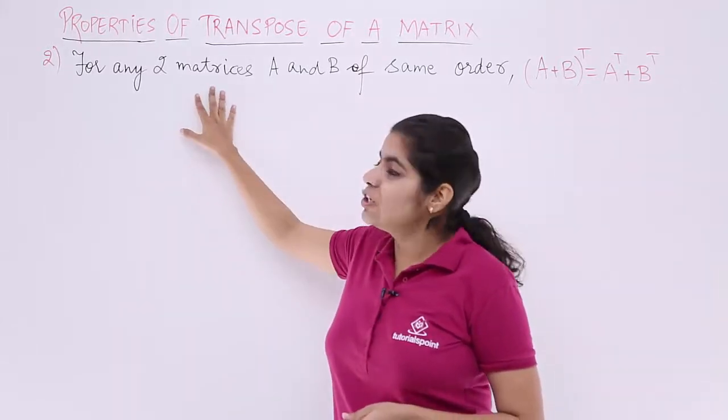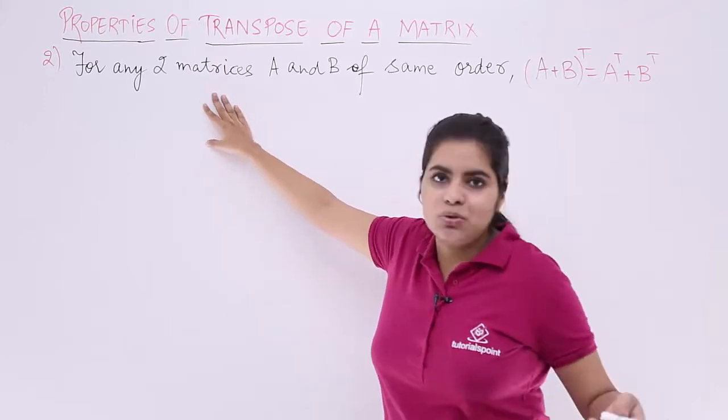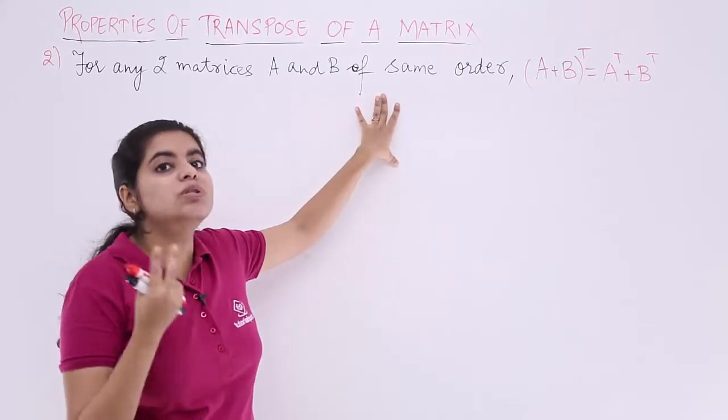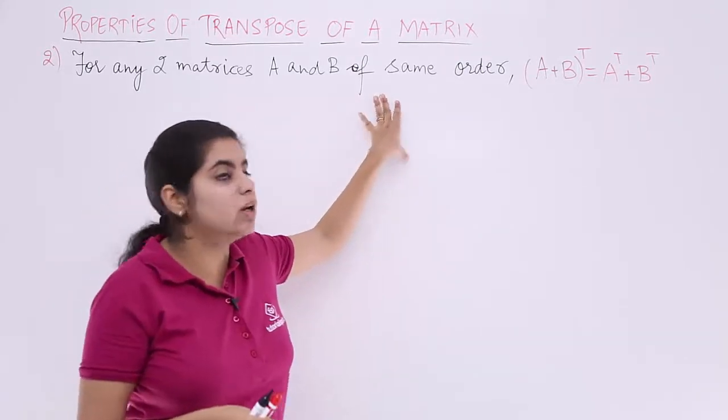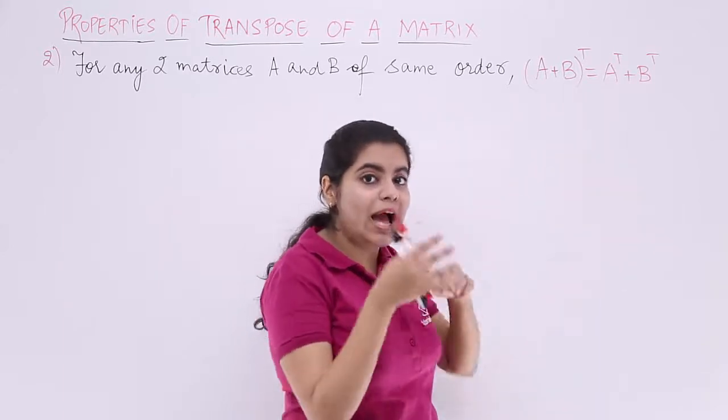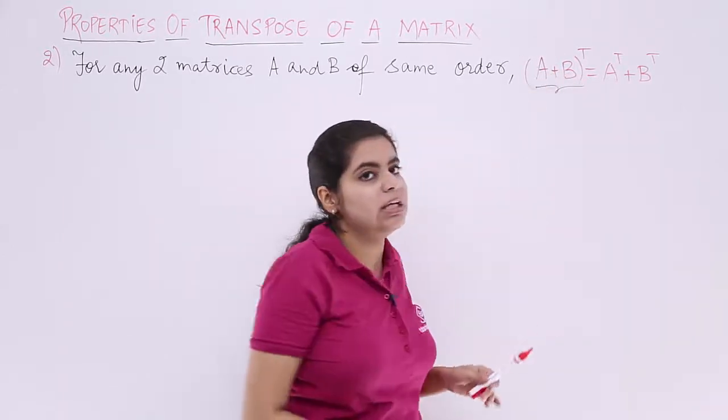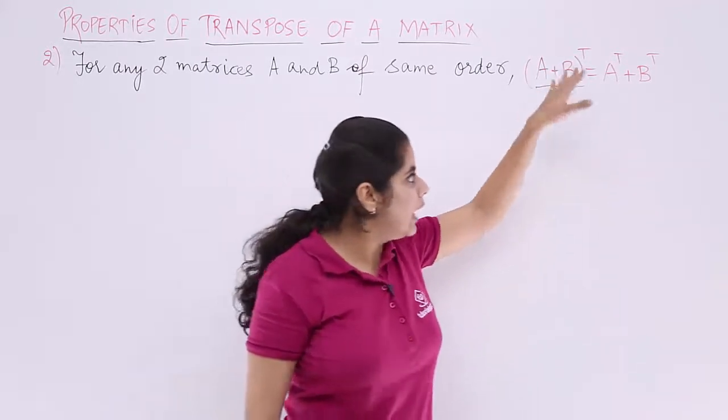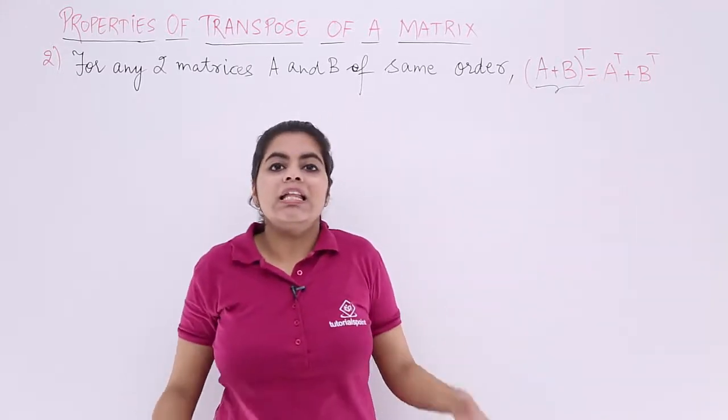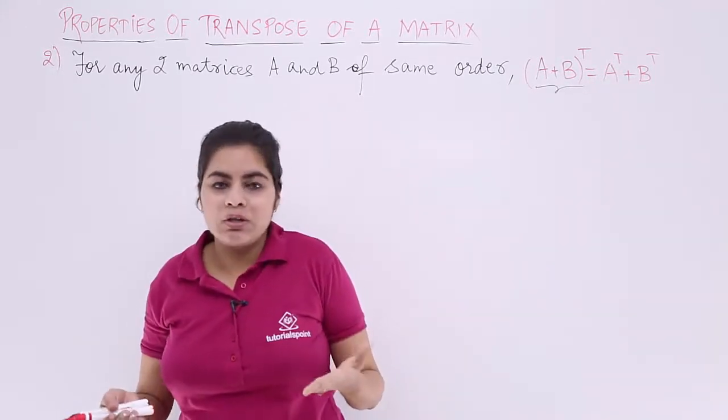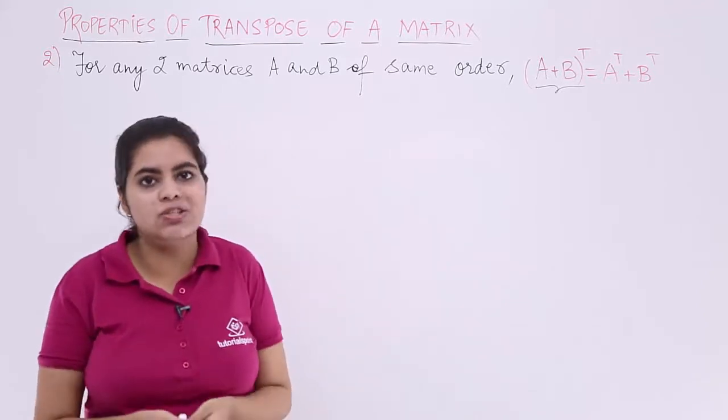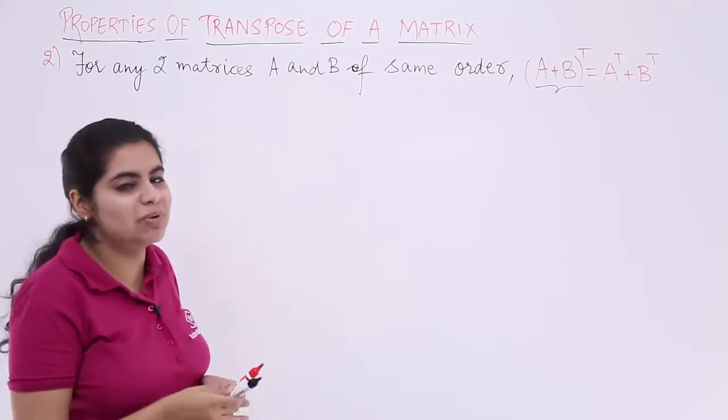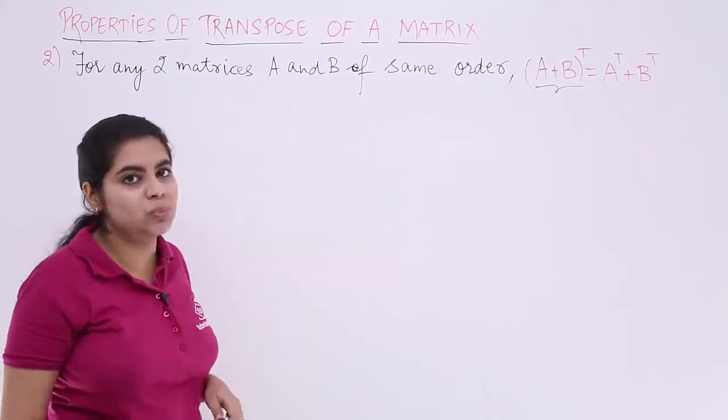For any two matrices A and B of the same order, they will follow this property: if you add the matrices first, that means A plus B, and then take the transpose, that is equal to A transpose plus B transpose. The important way to understand this besides theoretical proof is illustrations and numericals. So let's see one numerical illustration for this property which will help us to prove it.